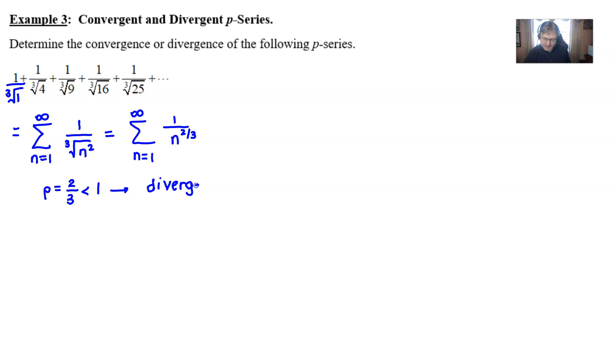that means you have a series here that will diverge. You cannot add them together. They're going to make too big of a result. Yes, the terms are getting smaller, but they're just not getting smaller fast enough.